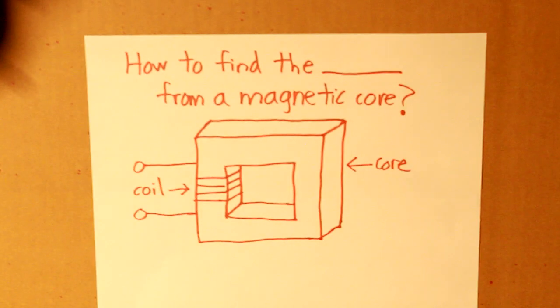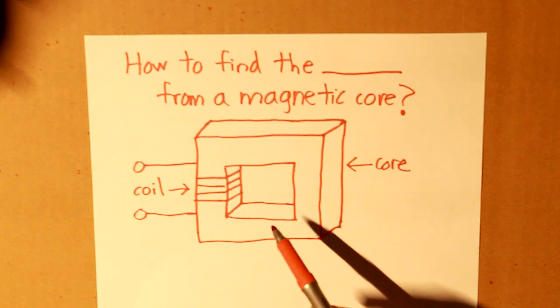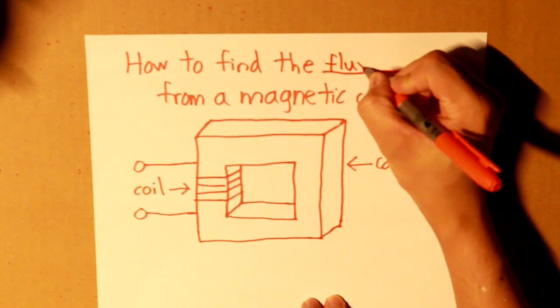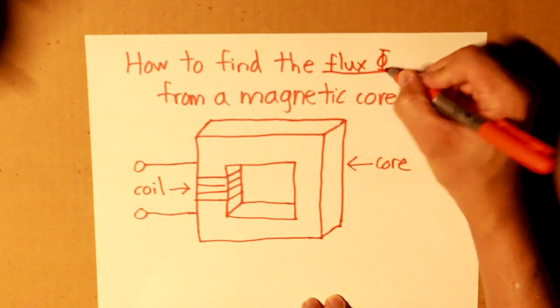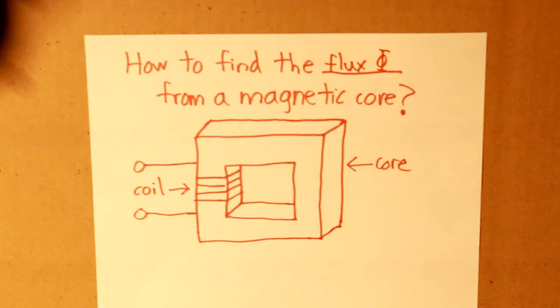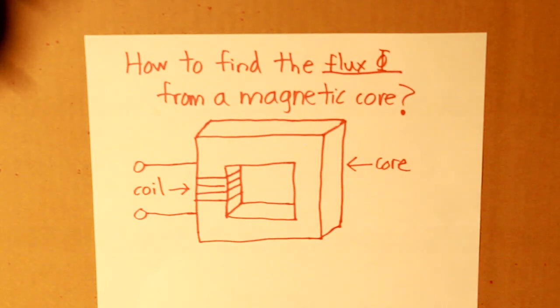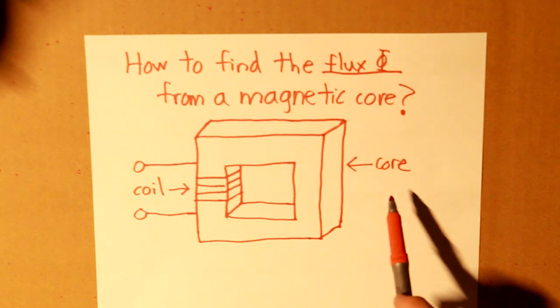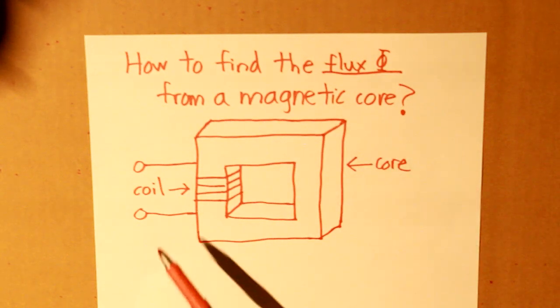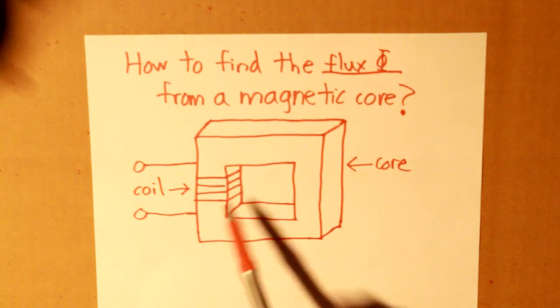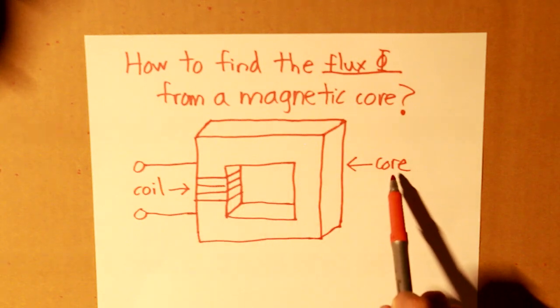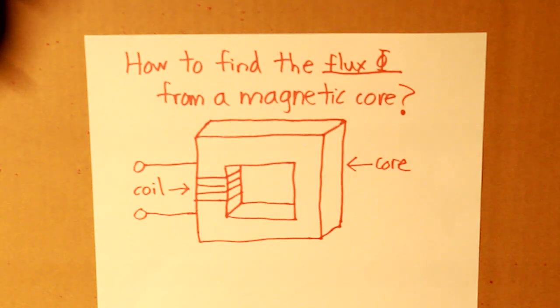Hello everybody, in this video the question remains, how to find the flux from a magnetic core. And this diagram shows a simple illustration of this magnetic core where we have this coil that is wrapped around this core. So how do we find it?